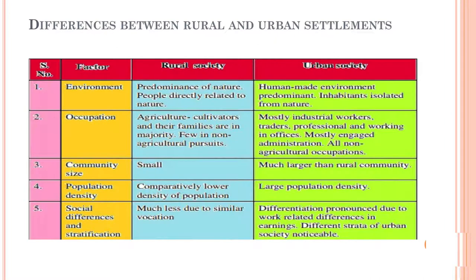Let us tabulate the differences between urban and rural settlement. First factor — environment: in rural areas, nature predominates and people are directly related to nature; in urban society, a human-built environment predominates and inhabitants are isolated from nature. Second — occupation: in rural society, agriculture cultivators and their families are in the majority with few in non-agricultural pursuit; while in urban society, workers are mostly industrial workers, traders, professionals and office workers, all engaged in non-agricultural occupations.